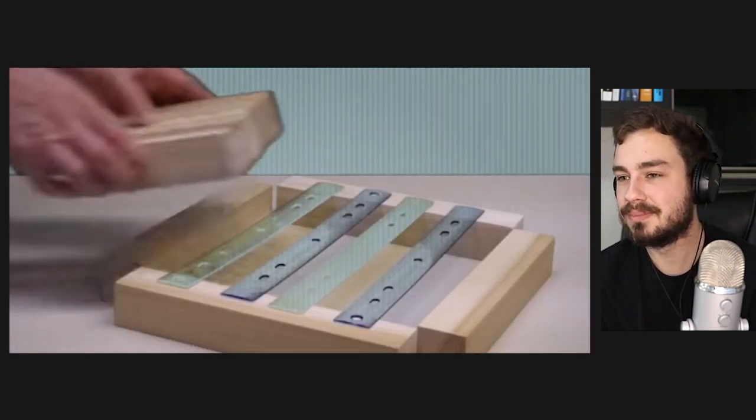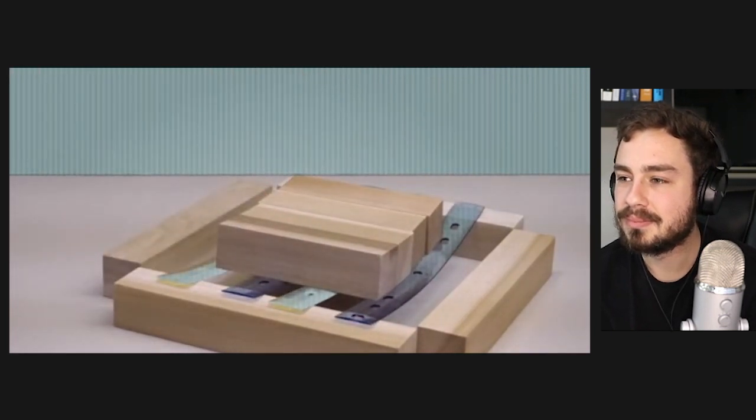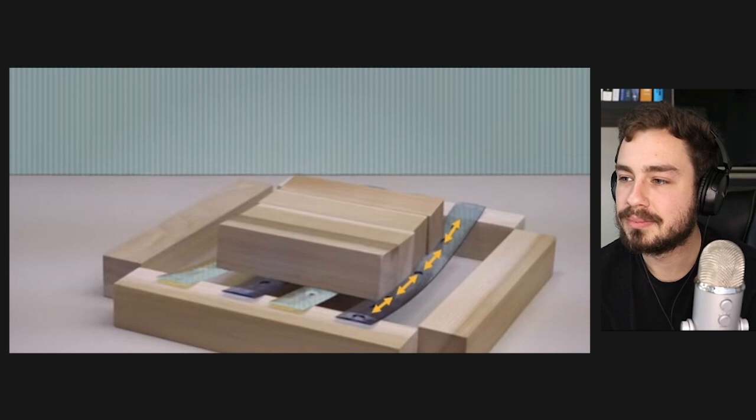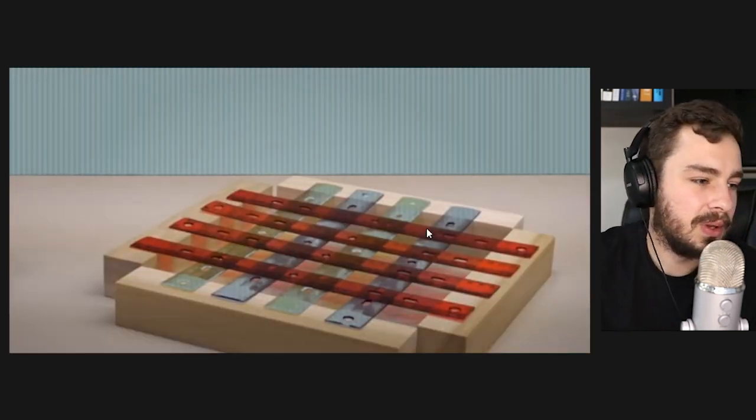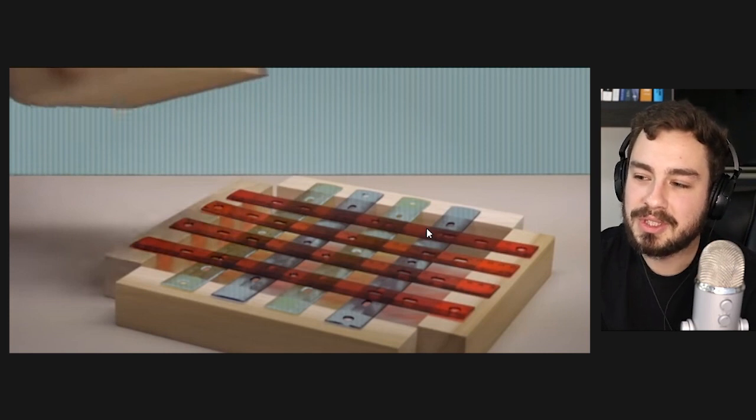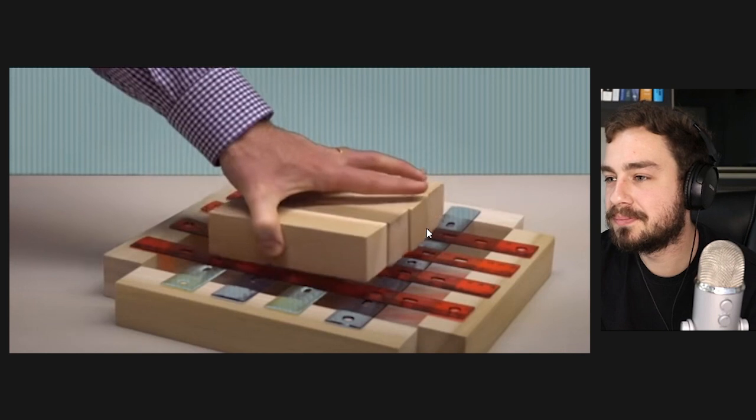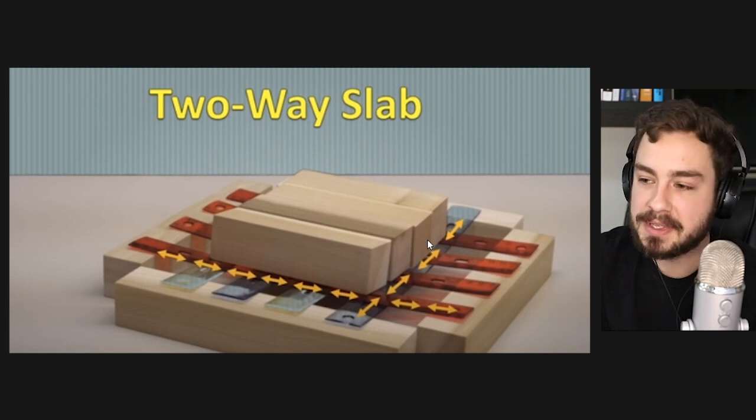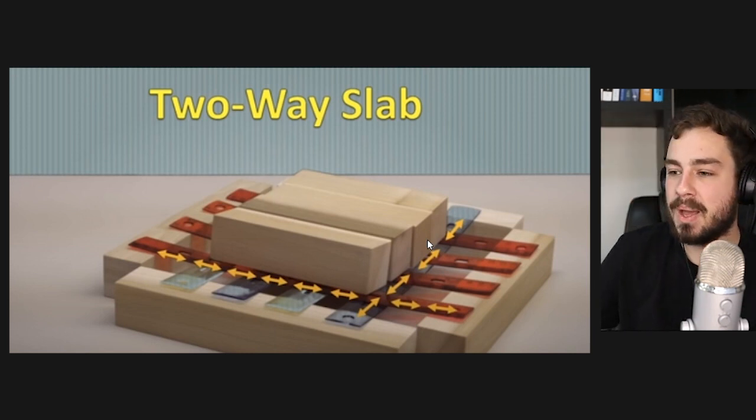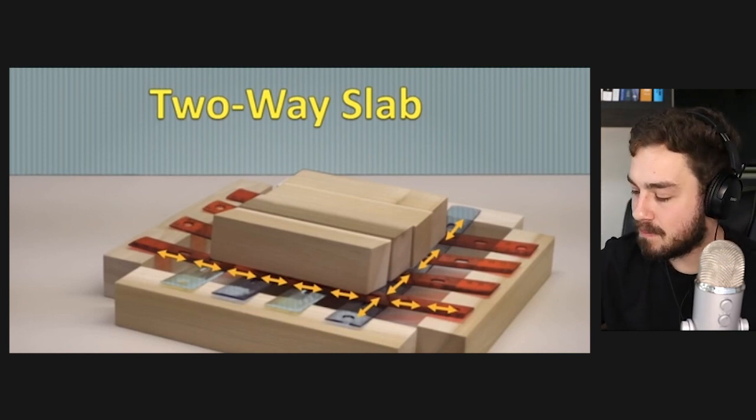If a slab is curved in only one direction, the load must be carried entirely by stresses in that direction, and it is called a one-way slab. If the supports cause the plate to curve in both directions, we have a two-way slab. Carrying of the load is then shared by stresses in the two directions and deflection is reduced.